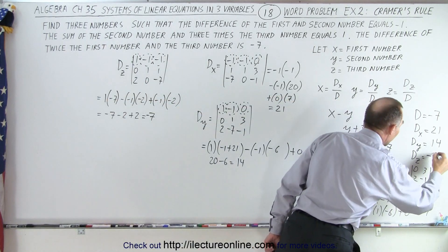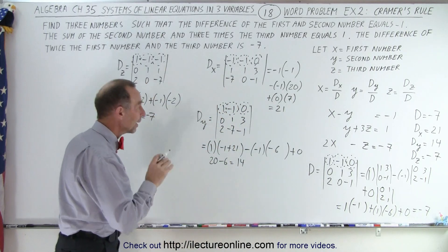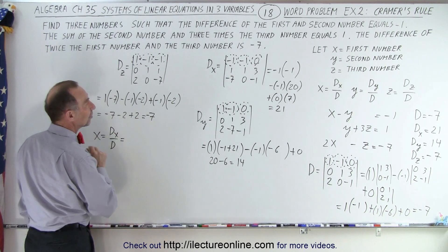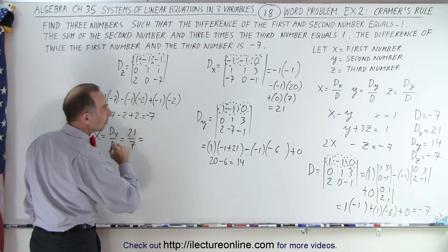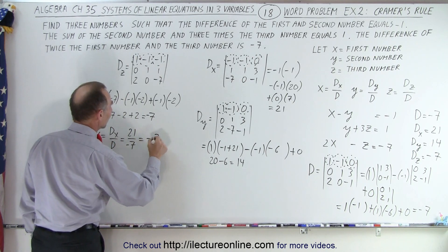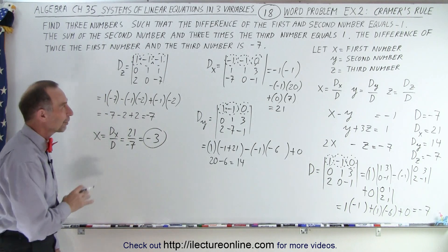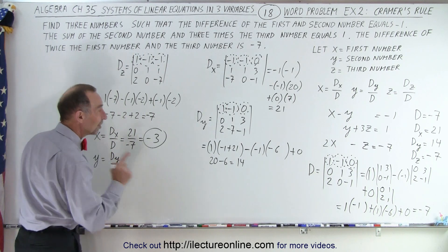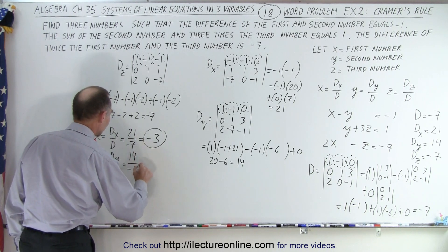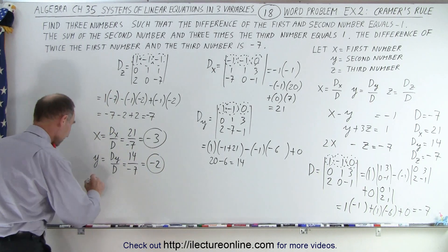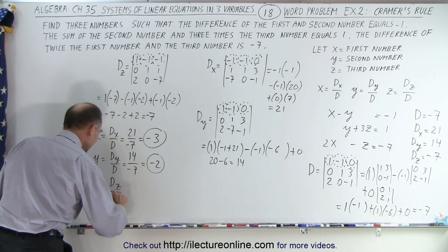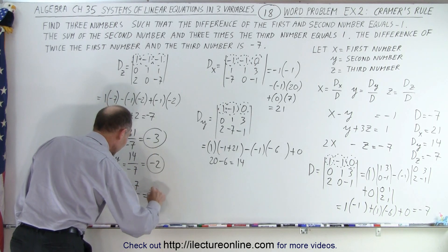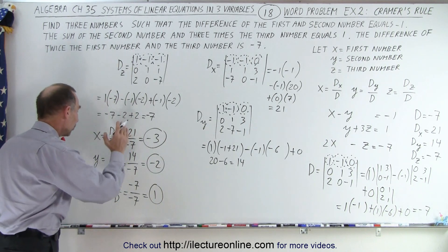Now we're ready to solve. x equals D sub x divided by D, which is 21 divided by negative 7, giving x equals negative 3. y equals D sub y divided by D, which is 14 divided by negative 7, giving y equals negative 2. And z equals D sub z divided by D, which is negative 7 divided by negative 7, giving z equals positive 1.